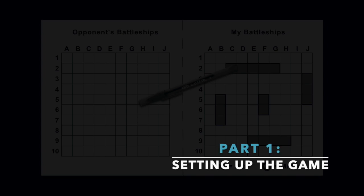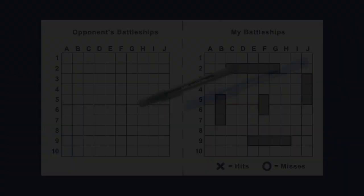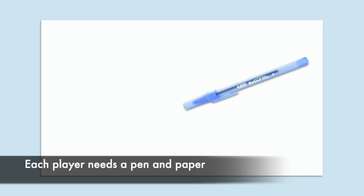To play the game of pen and paper battleship, first set up the game. To do this, first give each player a sheet of paper and a writing utensil. Next, both players will split their paper in half.